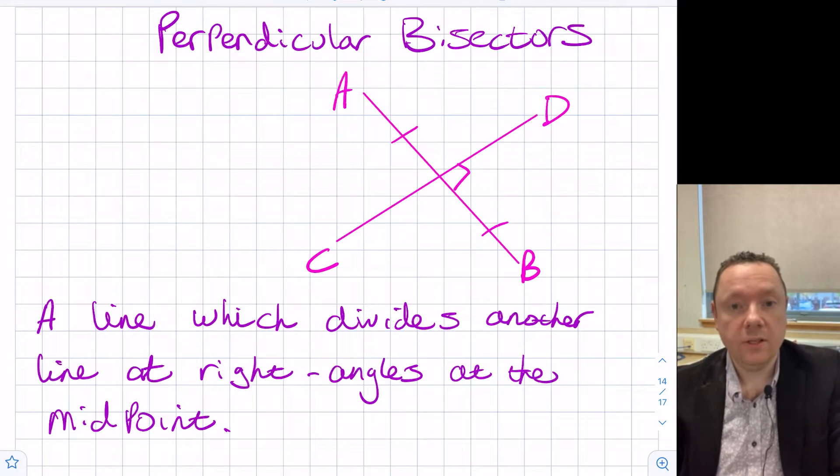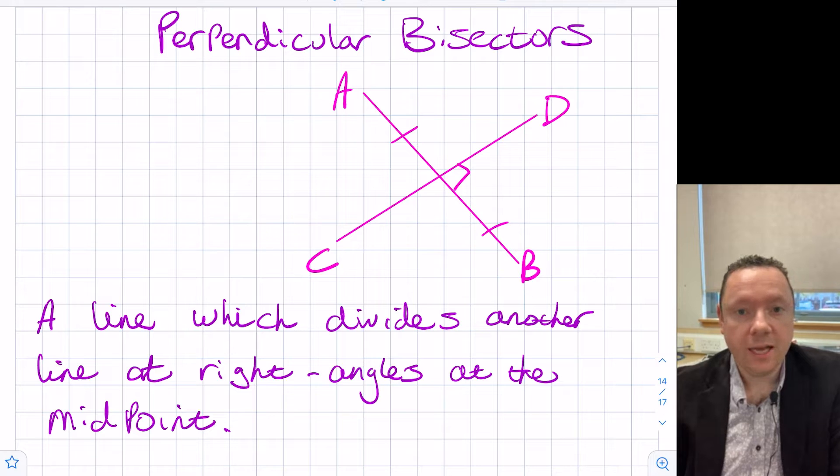This is Craig here from Craig Maths. In the last video we looked at the gradients of two lines which are perpendicular and we found out that if you times the gradients together you get the answer of minus one, which allows you to find the gradient of one of the lines given the gradient of the other. We'll now look at some specific lines.